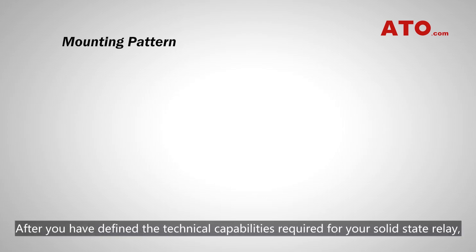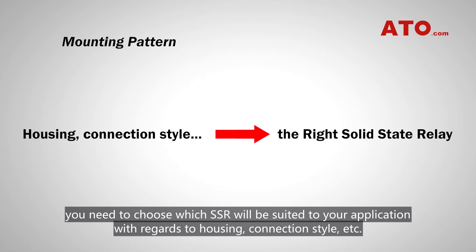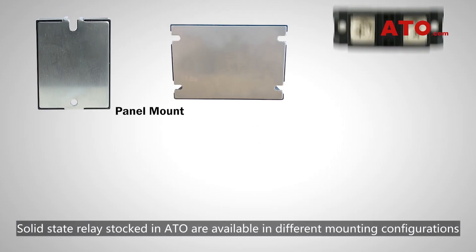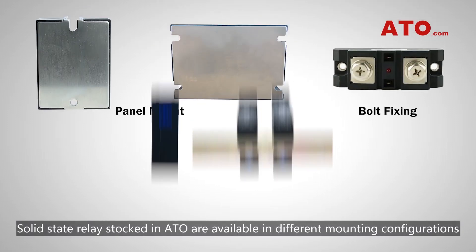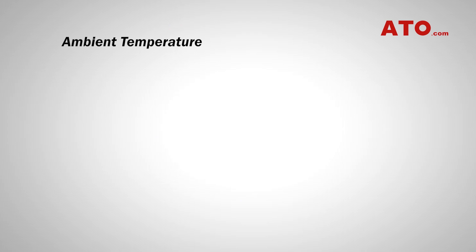Number 5: Determine the mounting pattern — panel or DIN rail mount. After you have defined the technical capabilities required for your solid-state relay, you need to choose which SSR will be suited to your application with regards to housing, connection style, etc. Solid-state relays stocked in ATO are available in different mounting configurations: panel or DIN rail mounted, or featuring screw connections.